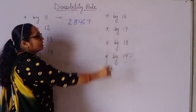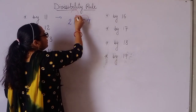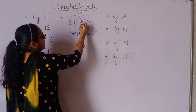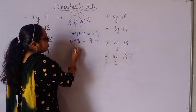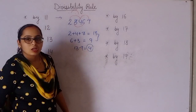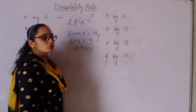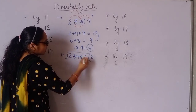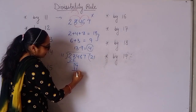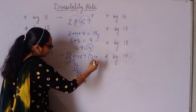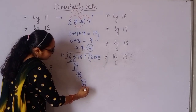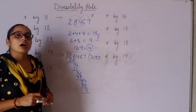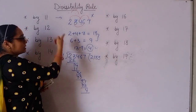For 23467: look at the places — odd place digits are 2, 4, 7, so 2 + 4 + 7 = 13, and even place digits are 3 and 6, so 3 + 6 = 9. Subtract: 13 - 9 = 4. Since 4 is not divisible by 11, this number is not divisible by 11. If you divide: the remainder is also 4. So only if the difference is 0 or divisible by 11 is the number divisible by 11.